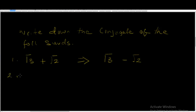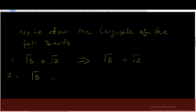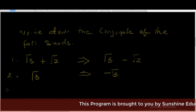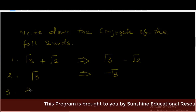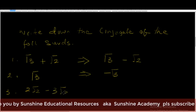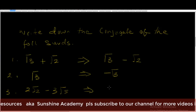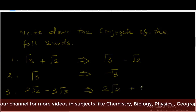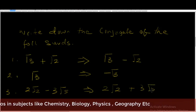Now let's take another example. Write down the conjugate of √3. Here you have plus √3, so the conjugate is going to be minus √3. Let's take another example: 2√2 minus 3√5. The conjugate of this surd is going to be 2√2 plus 3√5.